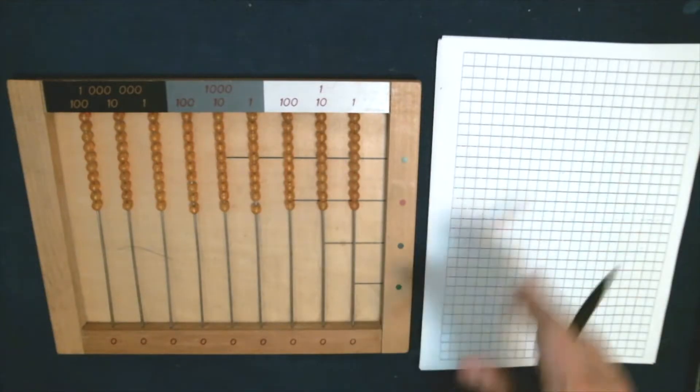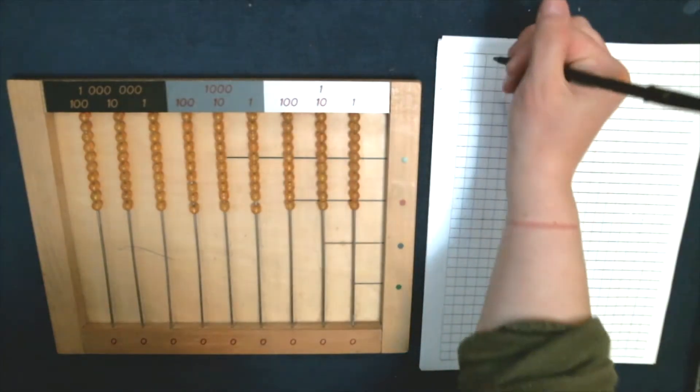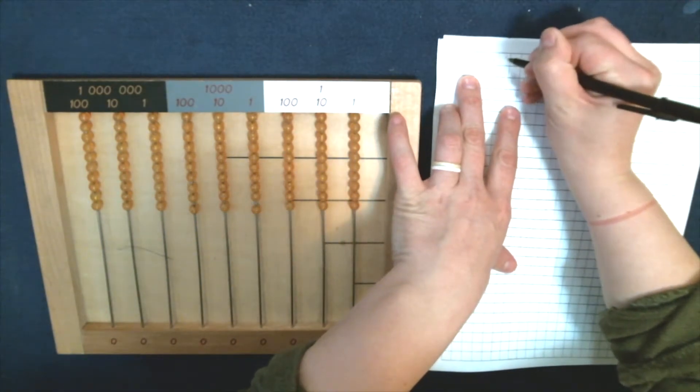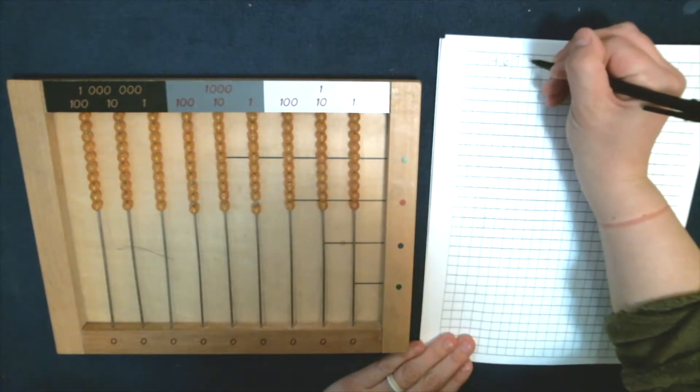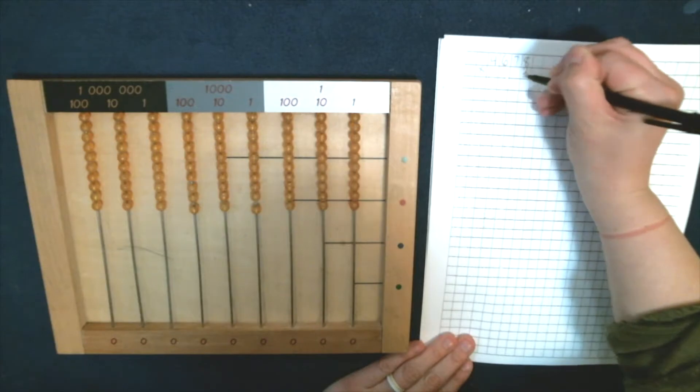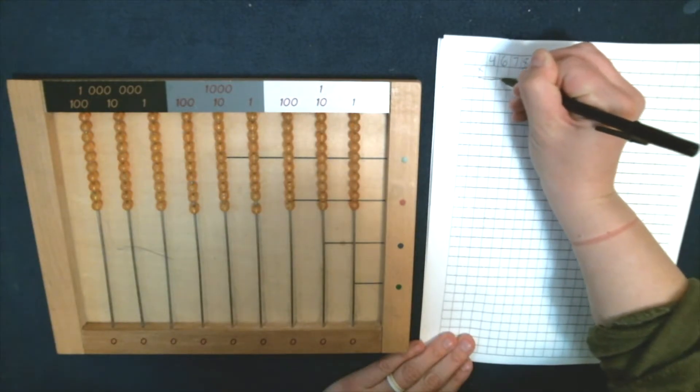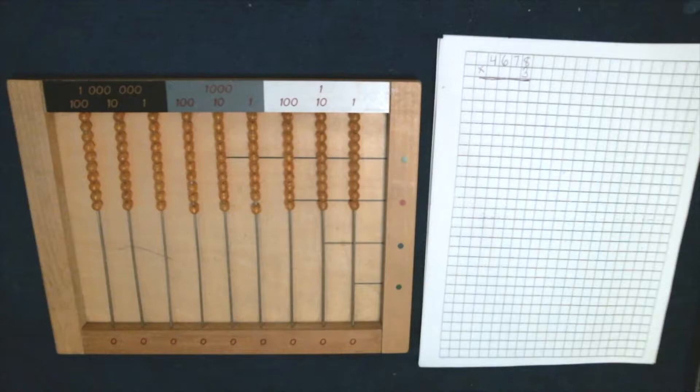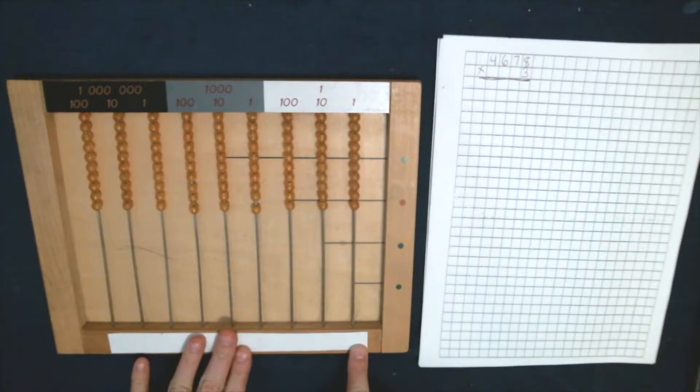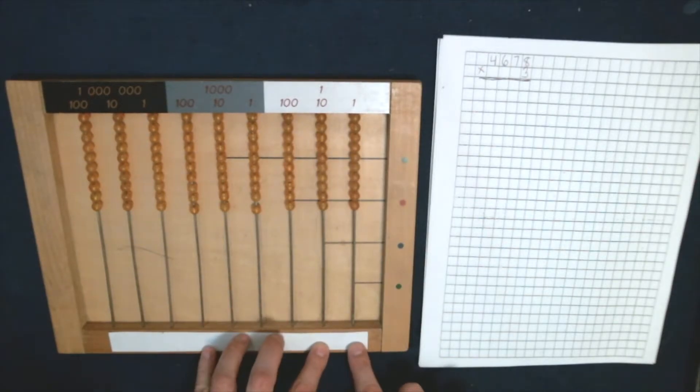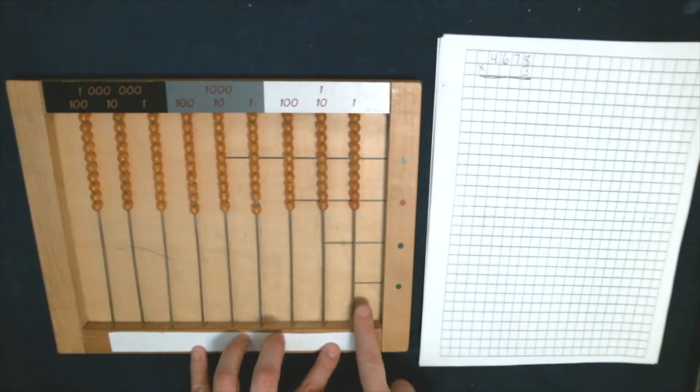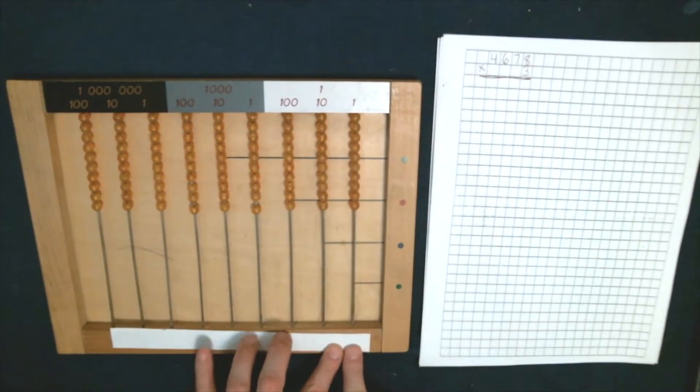I'm going to show you how we set up these problems. First I'm going to write our problem over here. We're going to multiply 4,678 times 3. I'm going to put a strip of paper here on my list, and I'm going to write the multiplicand on this strip of paper. I have eight units, so I'm going to write eight right under my units wire.